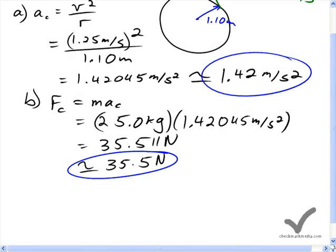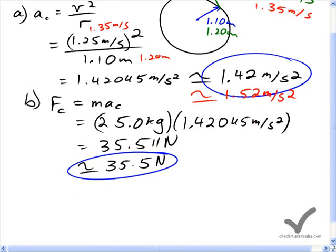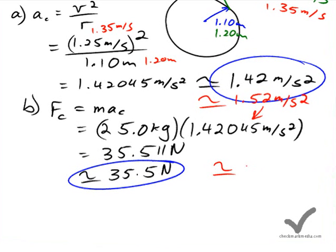For the fifth edition, you'll have 1.2 meters here for the radius, and you'll have 1.35 meters per second. And you substitute those numbers in, so it's 1.35 here, and it's 1.20 meters here. Your answer will be 1.52 meters per second squared. And substituting that into here will give you an answer for centripetal force of 38.0 newtons for the fifth edition.